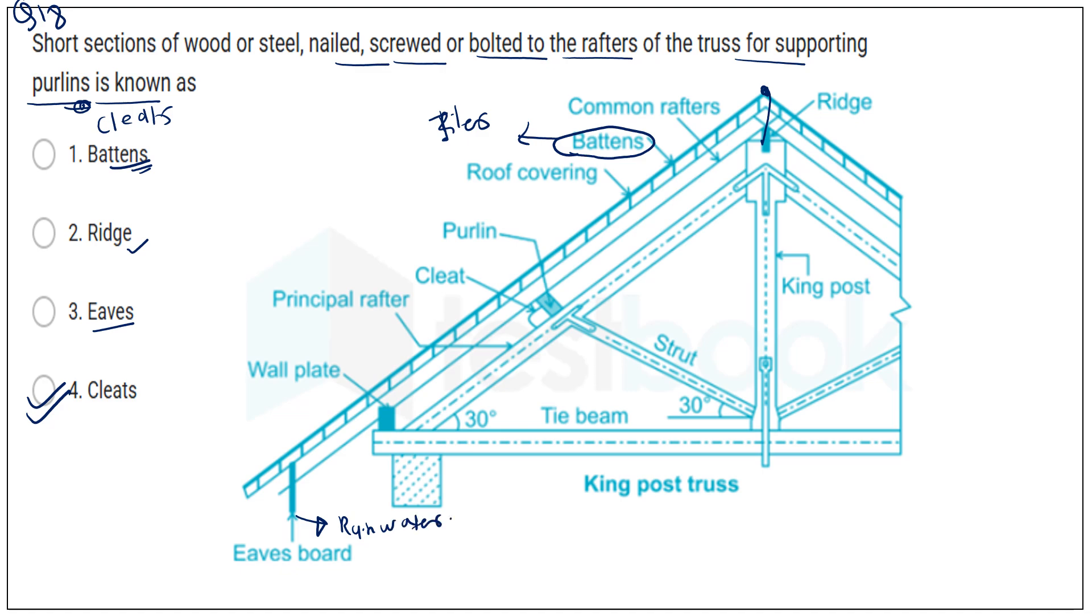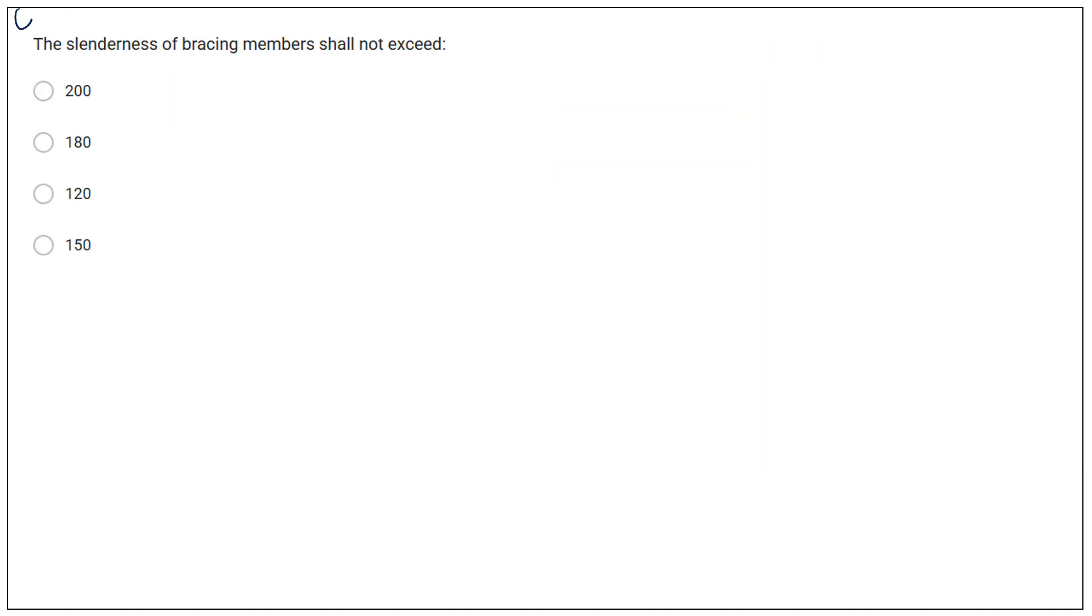The next is question number 19. The slenderness of bracing member should not exceed. So the slenderness of bracing member should not exceed 120. So here third option is correct.